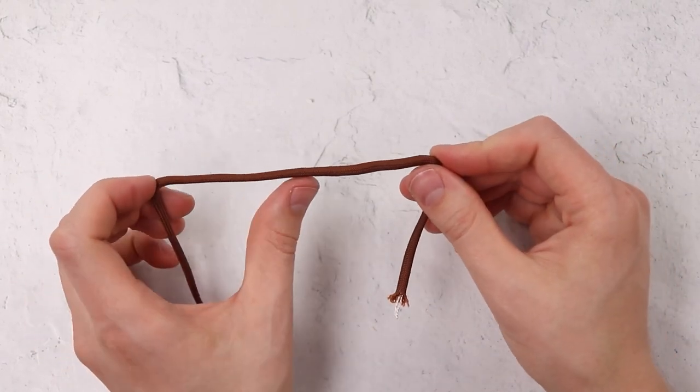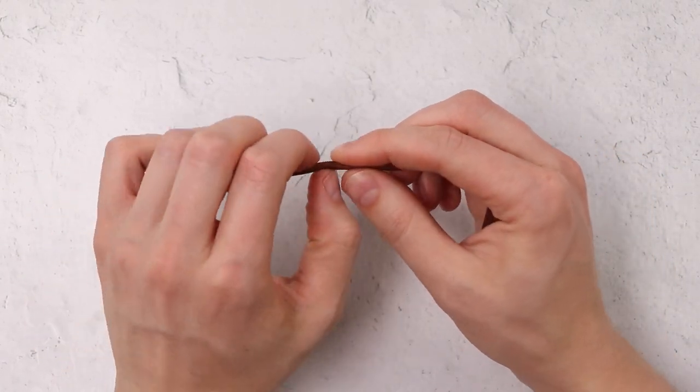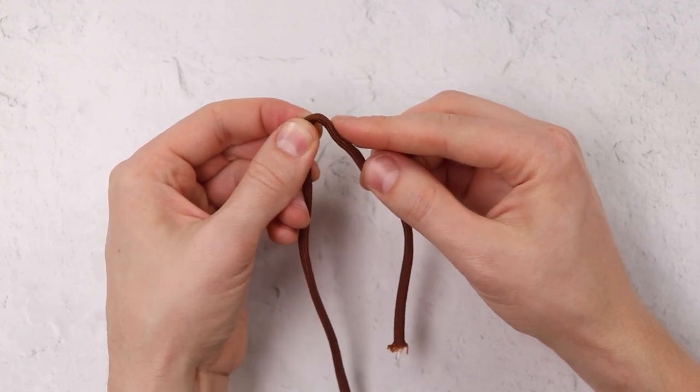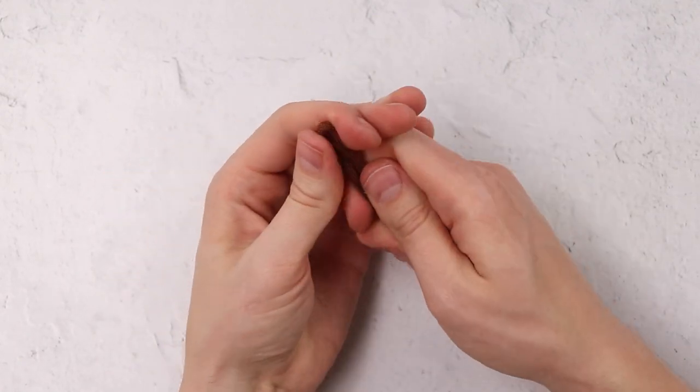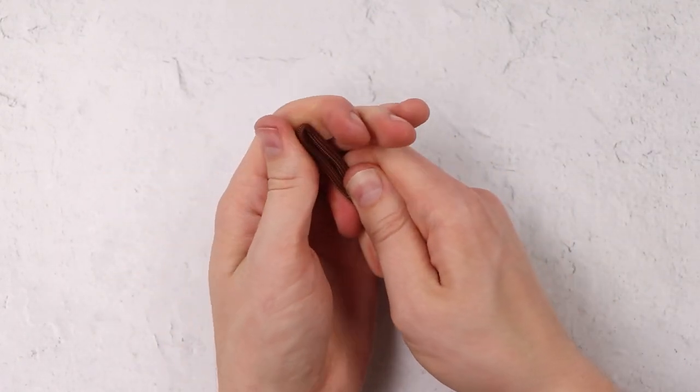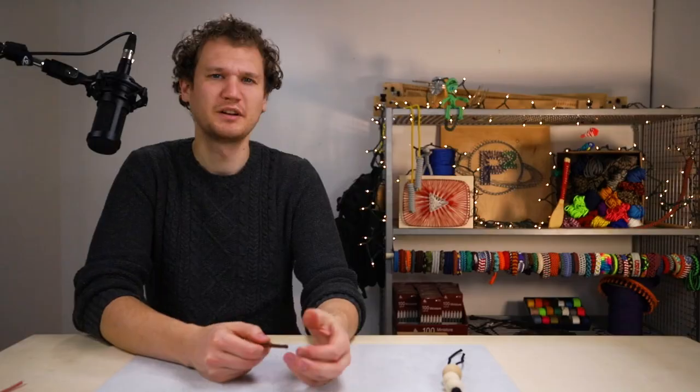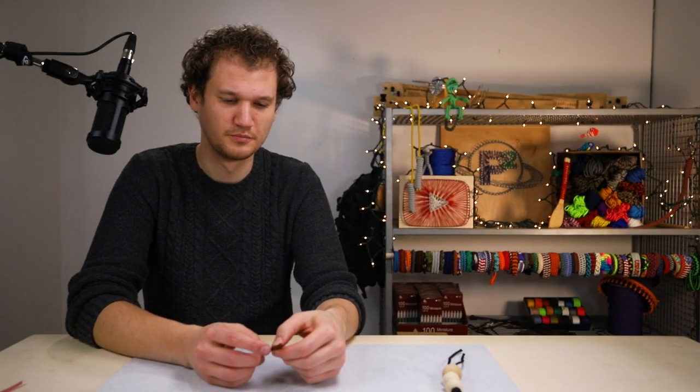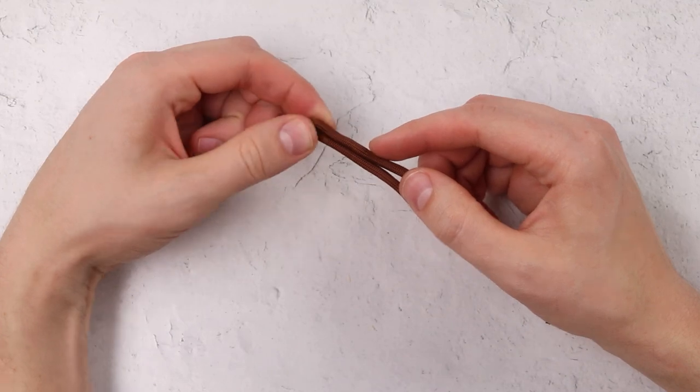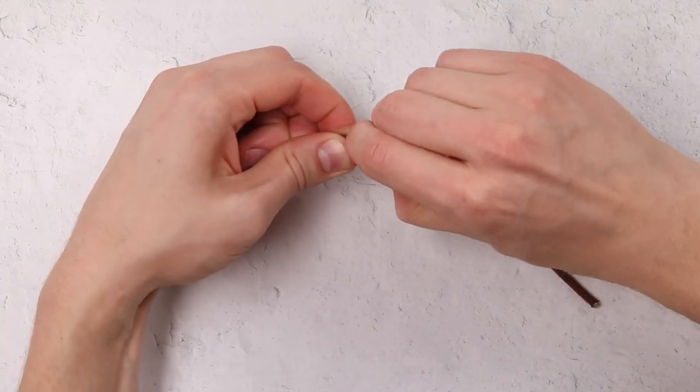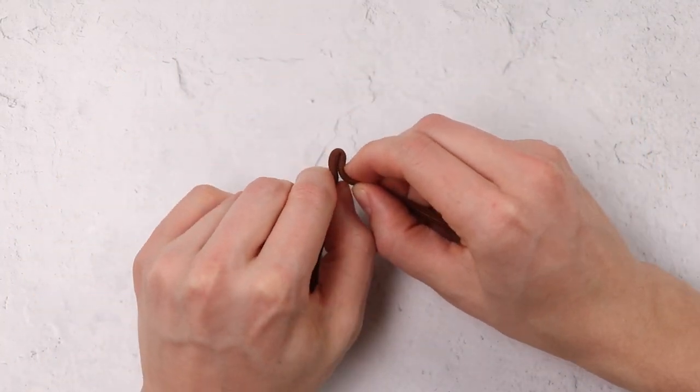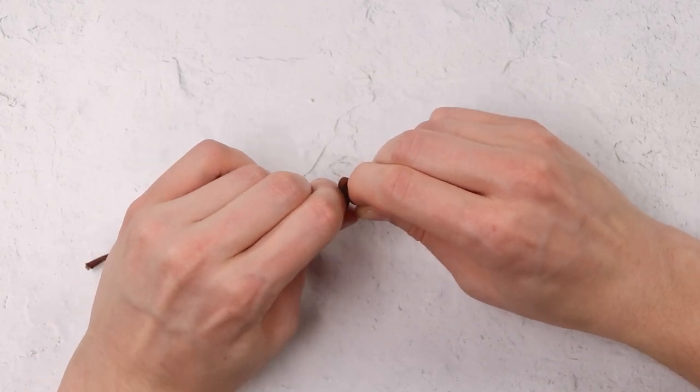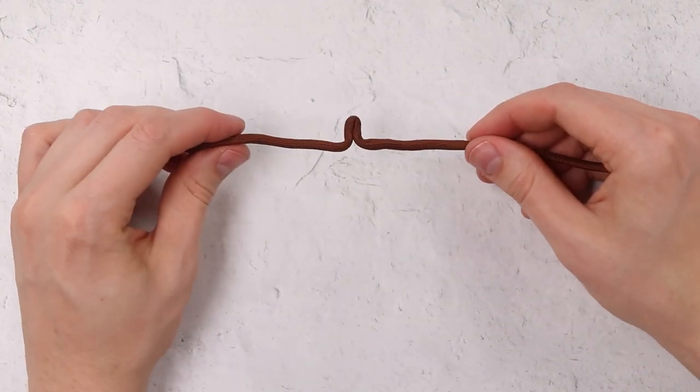Once you have that threaded in, fold your wire portion in half, and get a pliers if you need to fold that. But it's pretty flexible, so I can do it with my fingers too. And then go about a half inch in from the end and flip those arms back out to the side. It should look like that.